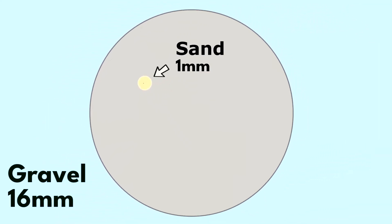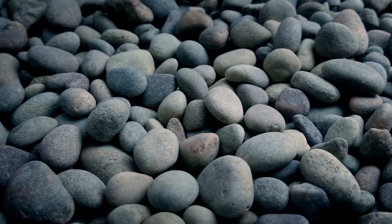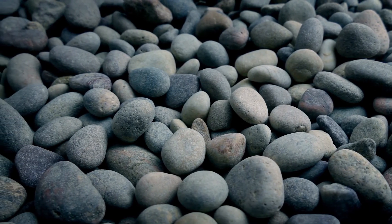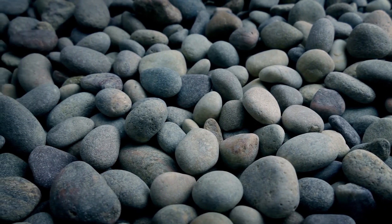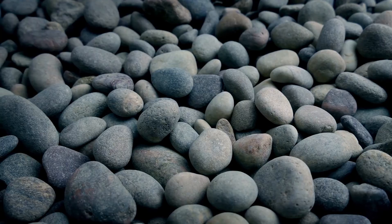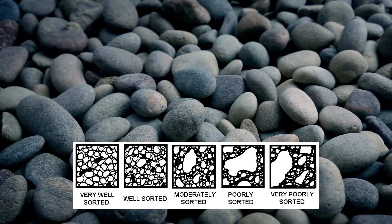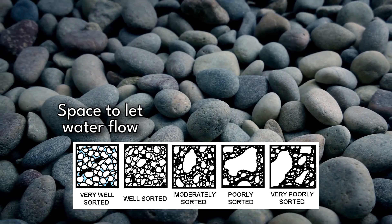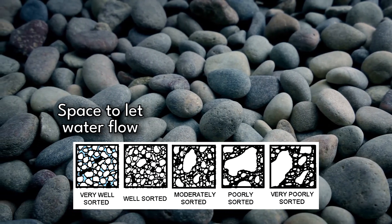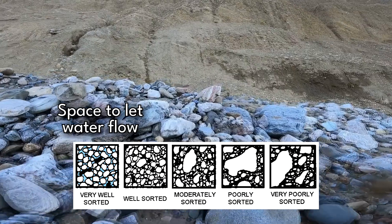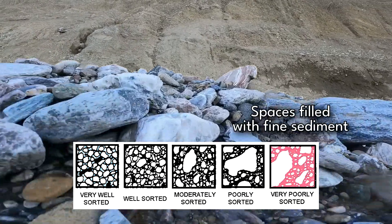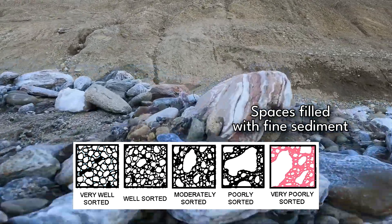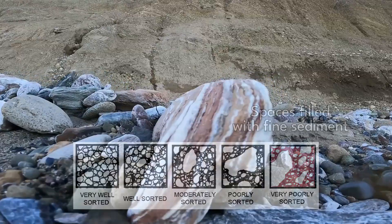The shape and sorting of the grains are important factors in how porous the rock or sediment will be. Particles of uniform size — what we call well-sorted — have more pore space available than poorly sorted grains or grains of varying sizes, because smaller particles can fill in the spaces between the larger grains.